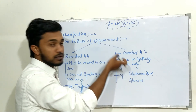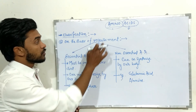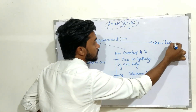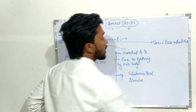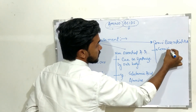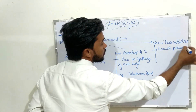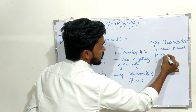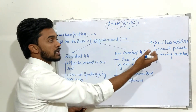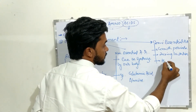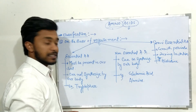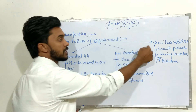The third category on the basis of requirement is semi-essential amino acids. These are required only during growth periods or during lactation. So they are considered semi-essential amino acids. For example, histidine. These are the three categories: essential, non-essential, and semi-essential.